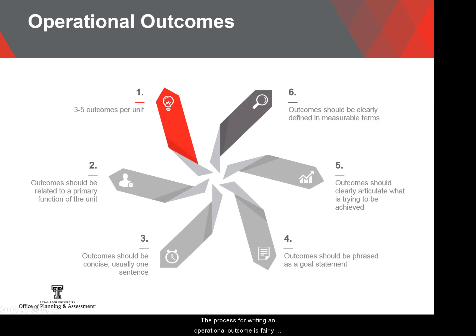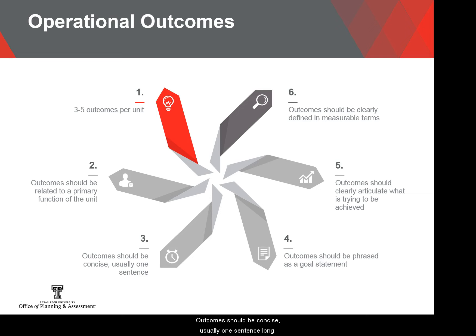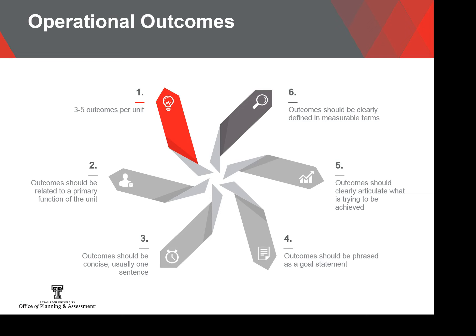The process for writing an operational outcome is fairly straightforward. Each unit should have three to five outcomes, and outcomes should be related to a primary function of the unit. Outcomes should be concise, usually one sentence long, and phrased as a goal statement. Outcomes should also clearly articulate what is trying to be achieved and be clearly defined in measurable terms.